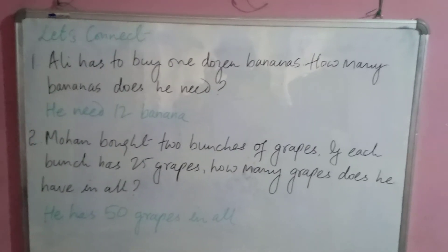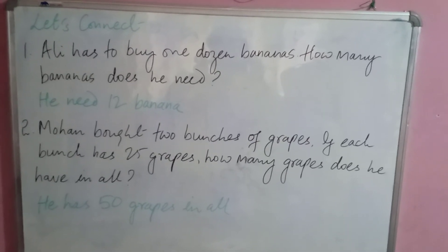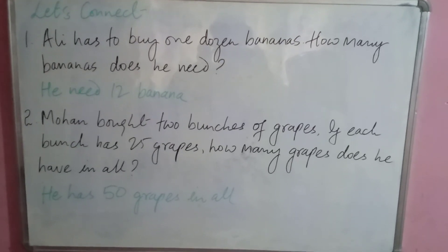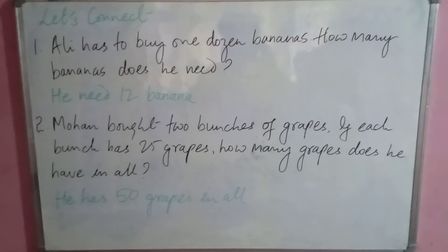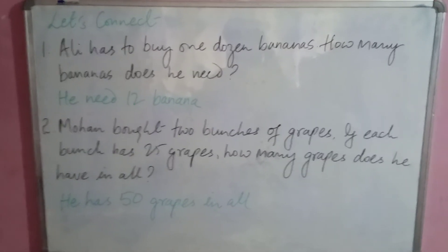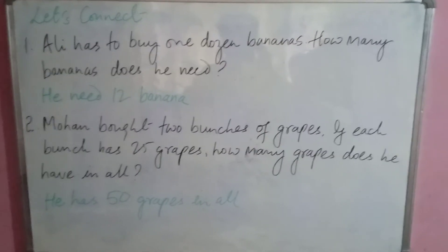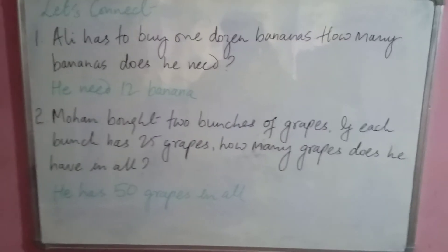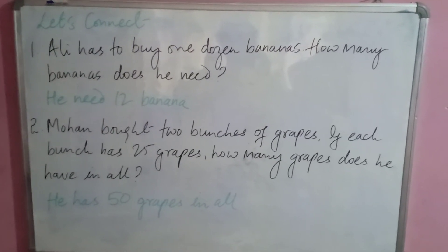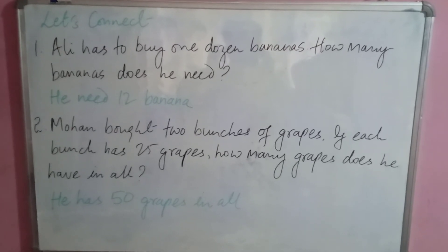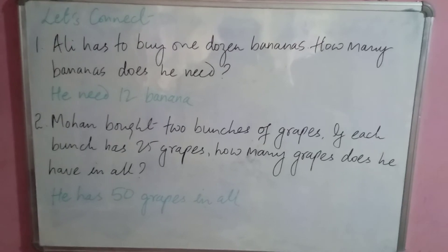Let's begin with the let's connect questions. Question one: Ali has to buy one dozen bananas — how many bananas does he need? He needs 12 bananas, because one dozen means a set of 12.